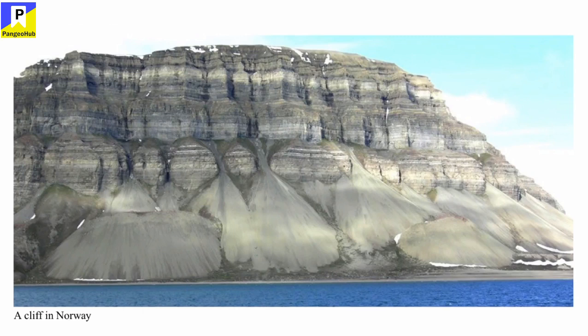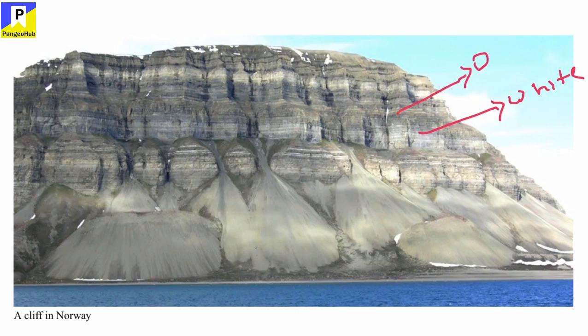There are a huge number of data to be recorded. This is a field photograph where you can see a succession of sedimentary rock. What we can visually interpret from this photo: there are two types of color, mainly a white color and another is dark color. These white color rocks seem to be thick and the dark color rocks seem to be thin. Like this, there are various aspects which are to be observed from this sedimentary succession.